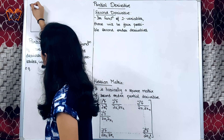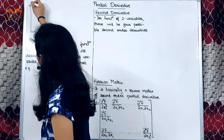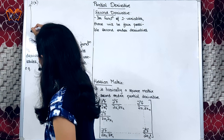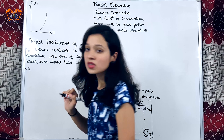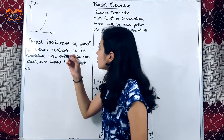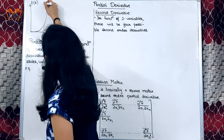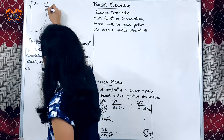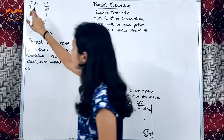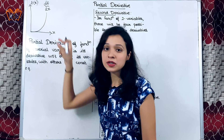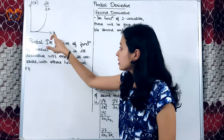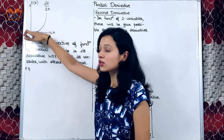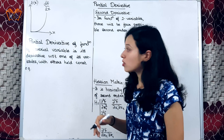Consider f of x as a random function. If we go for the derivative, we write df by dx. Derivative is the change of function with respect to change in x. This applies for a single variable, so we can call this a two-dimensional plot.